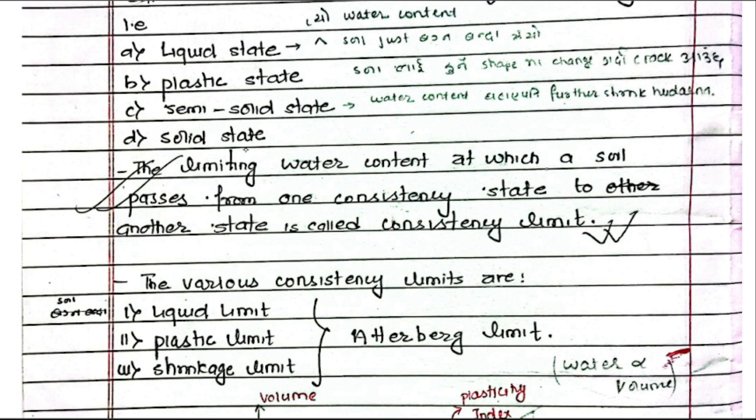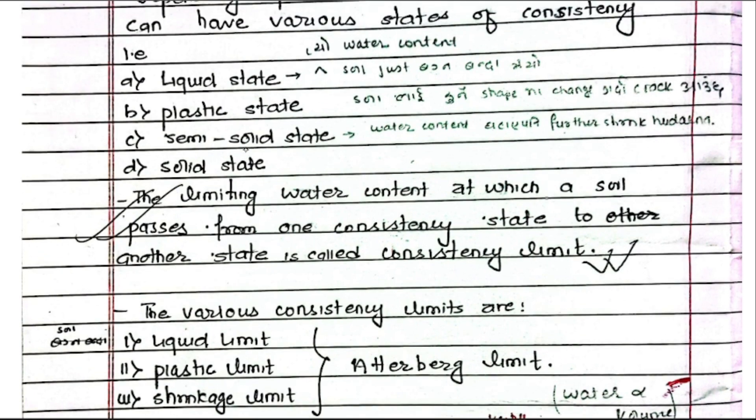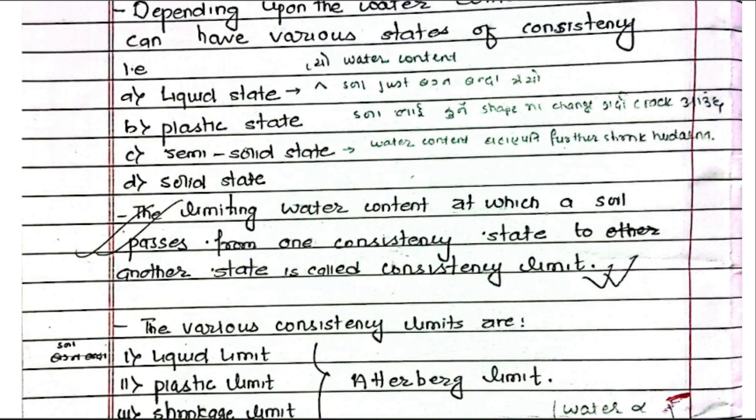The limiting water content at which soil passes from one consistency state to another state is known as a consistency limit.